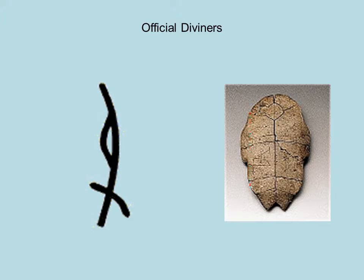The bone would crack, and based on how it cracked, that would reveal the answers to the questions that had been asked. For example, you might call on a specific ancestor — an earlier king — and ask: should we launch an invasion of the non-subordinates on our periphery? Or you might ask: will the queen's next birth be an easy one? Or: should we harvest now? These were very specific questions asked of the ancestors, and the official diviners would read the crack to provide the answer.